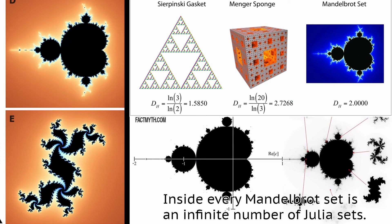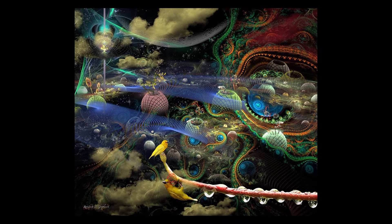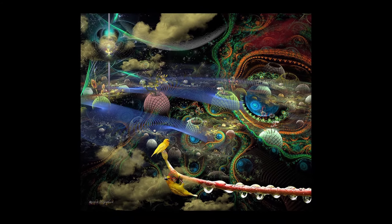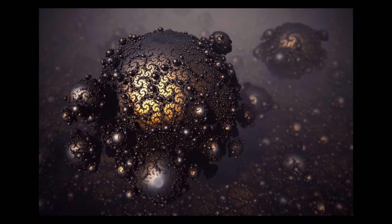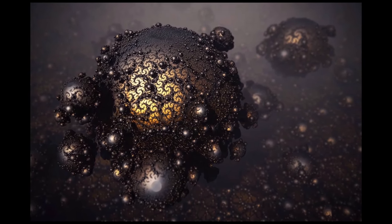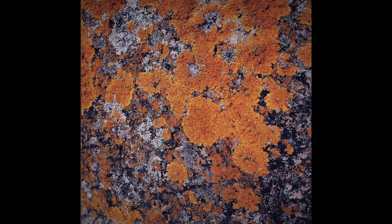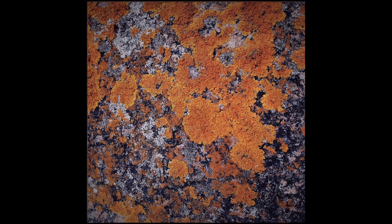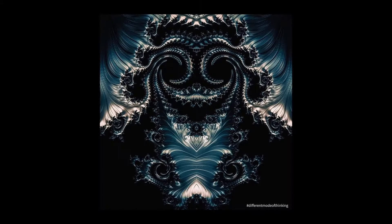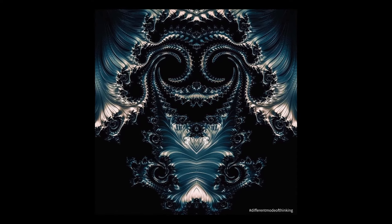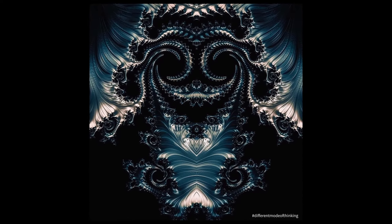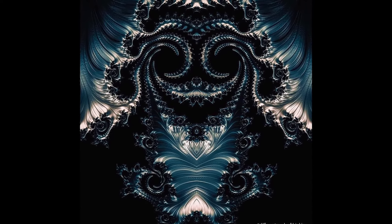In mathematics, famous fractals include the Mandelbrot set, Julia set, and Koch curve. Computer science utilizes fractals for image compression and generating realistic natural textures and graphics. Biological systems often display fractal properties, such as in the structure of lungs, blood vessels, and even brain activity patterns. The prevalence of fractals in nature may be due to how structures grow through processes of replication and self-similarity. Fractals are closely linked to chaos theory, as many chaotic systems produce fractal patterns.